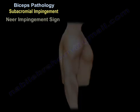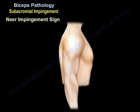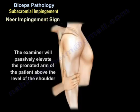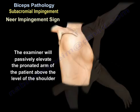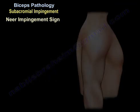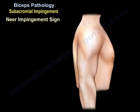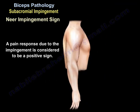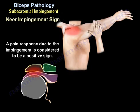Neer impingement sign: the examiner will passively elevate the pronated arm of the patient above the level of the shoulder. Make sure to warn the patient before beginning the examination because this may cause pain. A pain response due to the impingement is considered to be a positive sign.